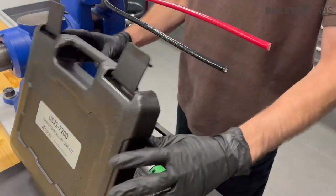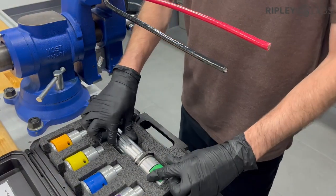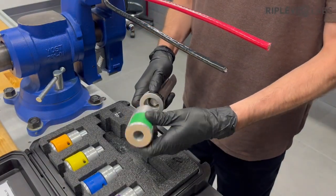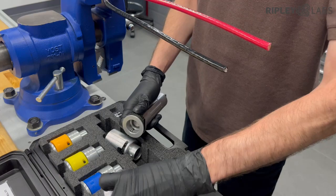The Ripley VariStrip comes with a wide range of bushings to serve all your THHN and XHHW needs. Let's walk through the simple steps.